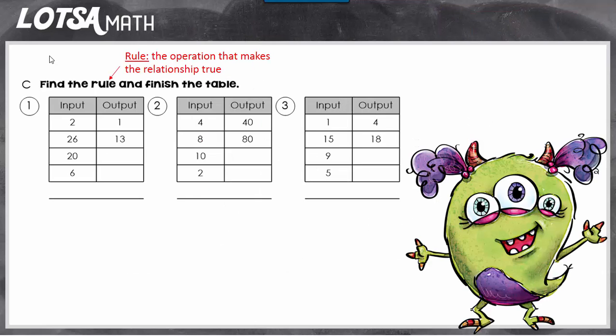To find the rule, the rule is just the operation that's going to make the relationship on the table true, and a table is just a way to organize related data.